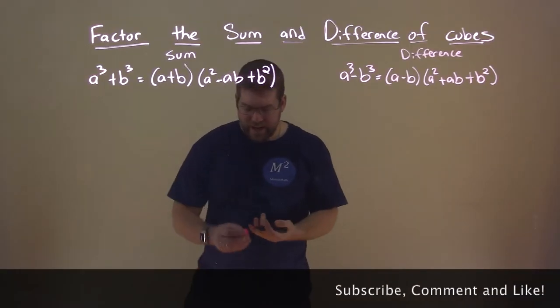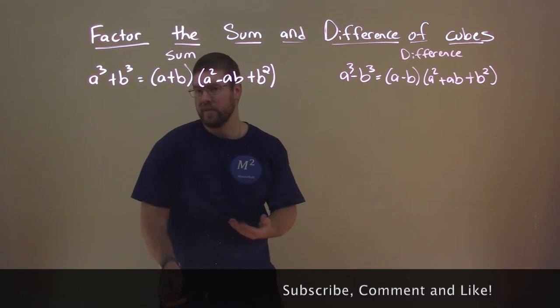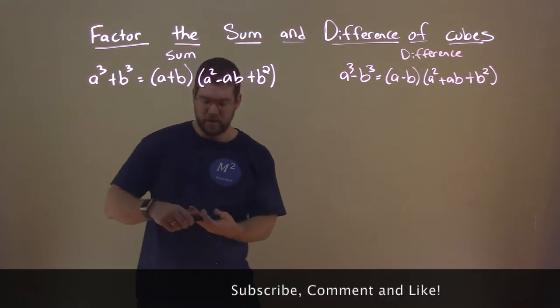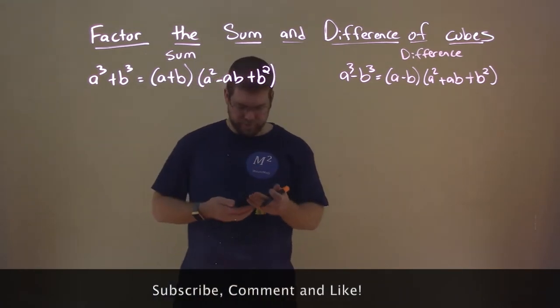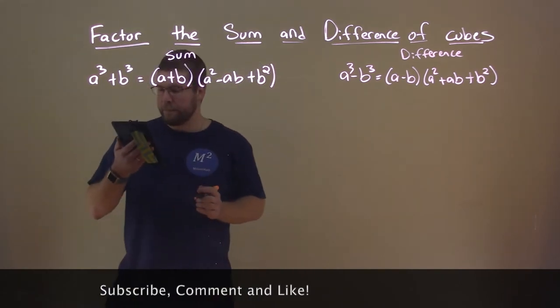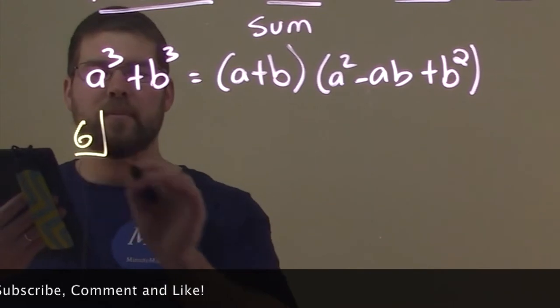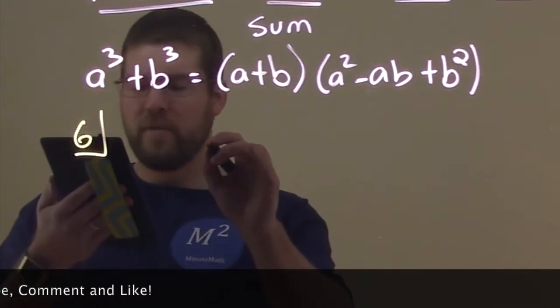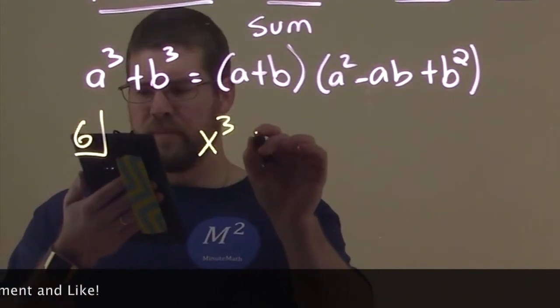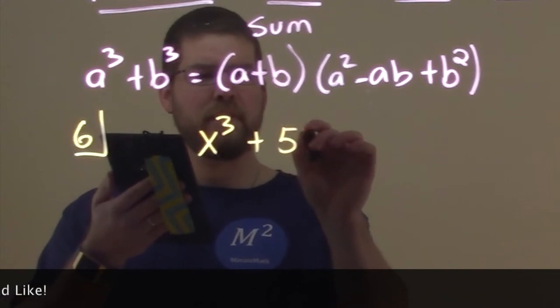So, let's dive in and do an example for each one. That's the best way to learn how to do this. So, I'm going to get a different color out here. Alright. So, let's do the sum. We'll have example six as an example of the sum. We have x to the third plus 512.